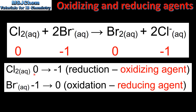For chlorine, the oxidation state has changed from 0 to -1. That's a decrease in oxidation state which is reduction, therefore chlorine is the oxidizing agent. Next the bromide ion — the oxidation state has changed from -1 to 0. That's an increase in oxidation state which is oxidation. The bromide ion has been oxidized, therefore it's the reducing agent. So in this reaction the chlorine has been reduced which makes it the oxidizing agent, and the bromide ion has been oxidized which makes it the reducing agent.